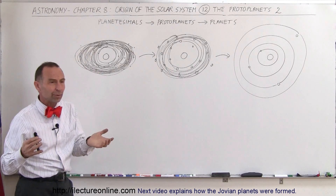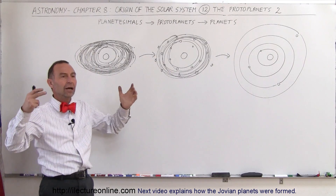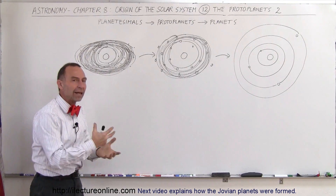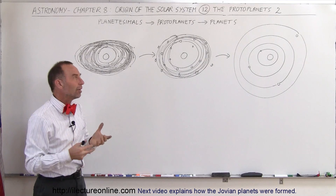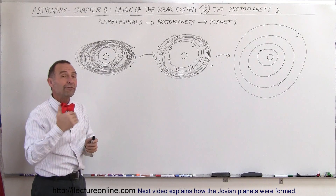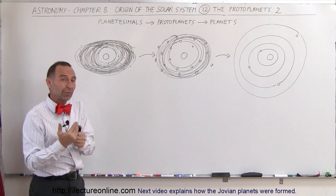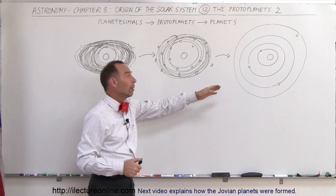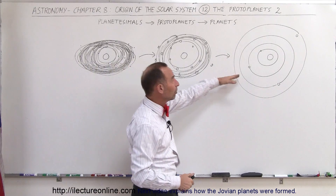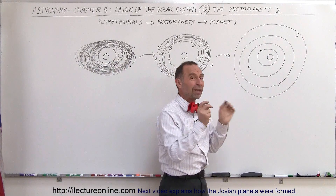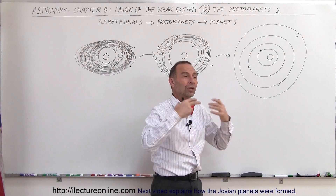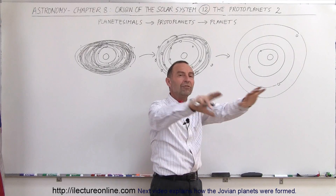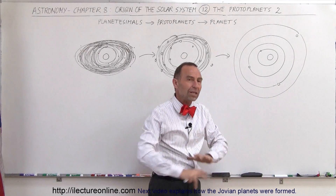It would seem reasonable that given the amount of space that was available and the amount of matter in that space, we would eventually end up with something like what we actually see in our solar system — four terrestrial planets spaced out in such a way that they would easily accrete all the debris out there.